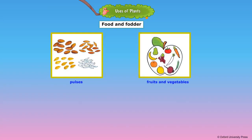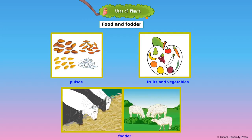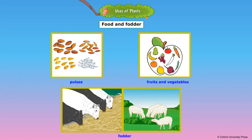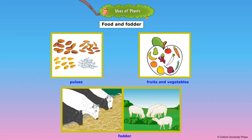Peas and beans are very nutritious and good for health. Some vegetables such as carrot and cucumber are eaten raw. Delicious fruits such as mango and pineapple also come from plants. Fodder, or animal feed, is any agricultural foodstuff used specifically to feed domesticated livestock such as cattle, goats, sheep, horses, chickens, and pigs.